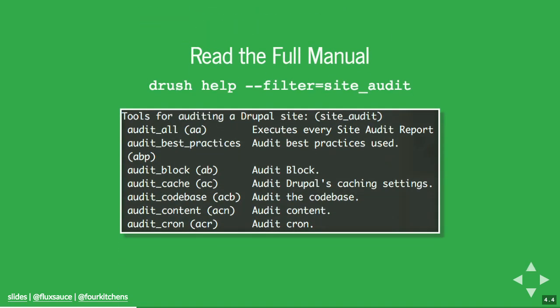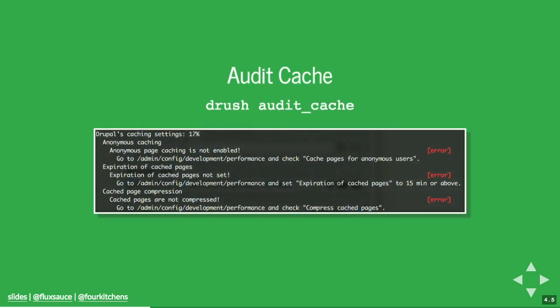Site Audit has a built-in manual because nobody wants to ask questions. Running 'drush help --filter=site_audit' will give you a list of all the available reports and a high-level overview of what each one does. There's also a convenient helper called 'audit_all' that just arbitrarily runs them all. Here's an example of a report — the audit cache report. Right at the very top it says Drupal's caching settings: 17%. A percentage on a scale of 1 to 100 — people understand that 17% is kind of bad. Each time you run this report, you get a number that can be used to determine success.